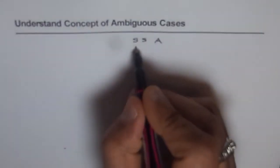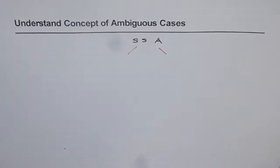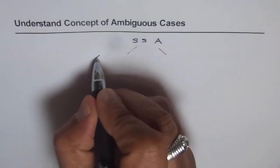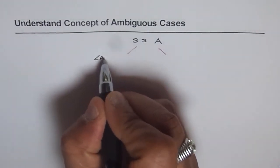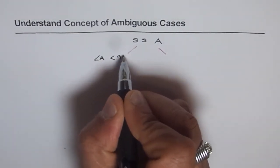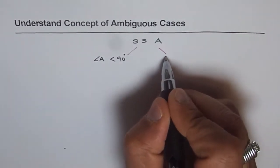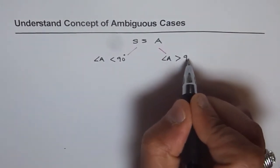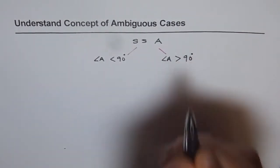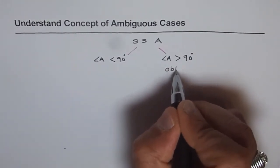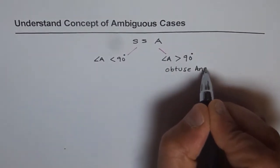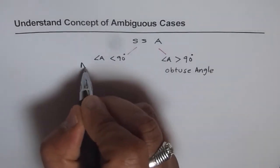In such cases, there are two conditions. One is that the angle given is an acute angle, so we have angle A which is less than 90 degrees. In the other case, when angle A is greater than 90 degrees, that is an obtuse angle.